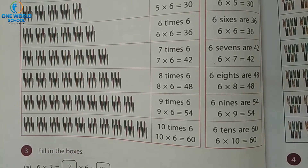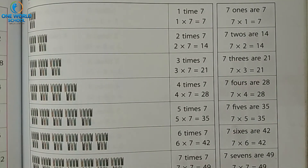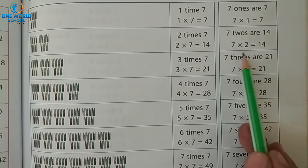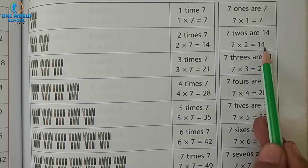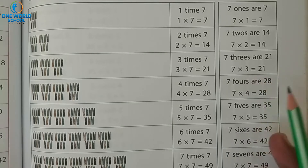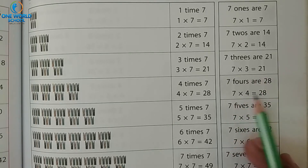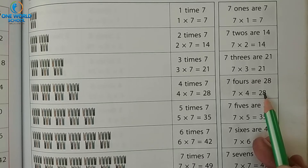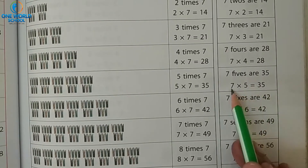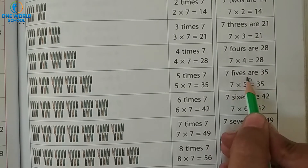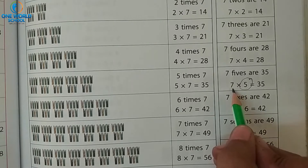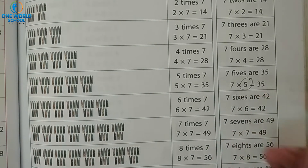Now table of 7. Take the next page. All of you will repeat with me. 7 ones are 7. 7 twos are 14. 7 threes are 21. 7 fours are 28. 7 fives are 35. 5 times 7, 7 fives are 35.